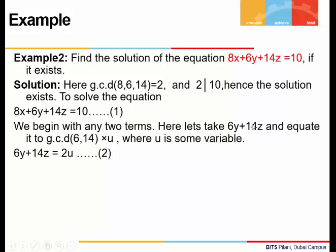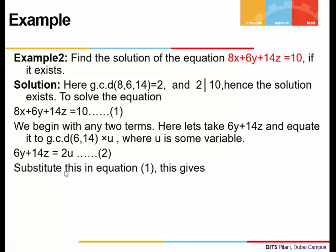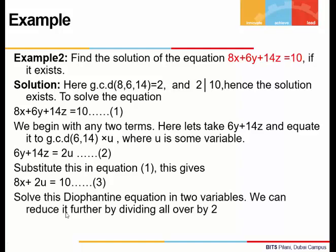Let's take the two terms 6y and 14z and equate to gcd(6, 14) times u. We get 6y + 14z = 2u. Substituting into the original equation gives 8x + 2u = 10. Dividing through by 2, we get 4x + u = 5, which is a linear Diophantine equation in two variables x and u that can be solved easily.